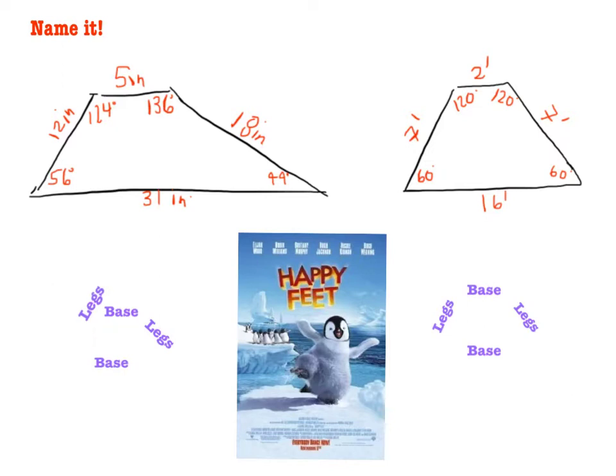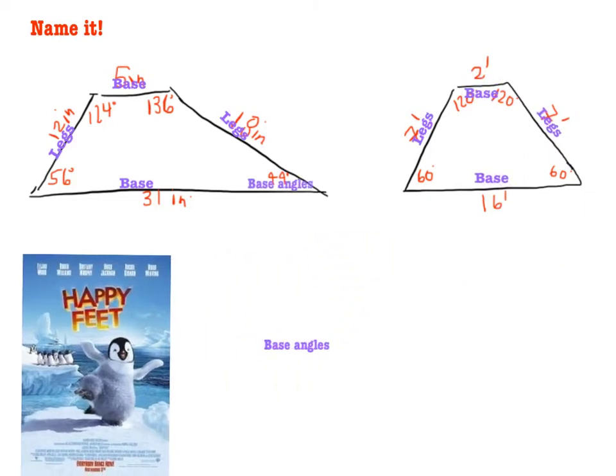Every trapezoid has two legs and two bases. The legs are on the left and right side and the bases are the two horizontal parallel parts. Again here are the legs, the bases, and then the last thing I wanted to show you is where the base angles are.